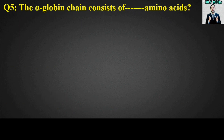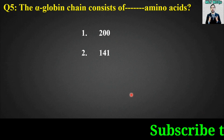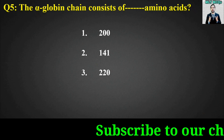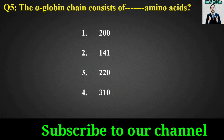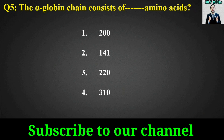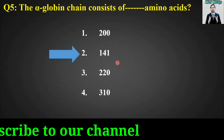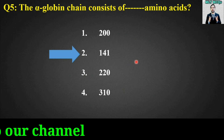MCQ number five: The alpha globin chain consists of blank amino acids. Options are: two hundred, one forty one, two twenty, or three ten. The right answer is option number two — the alpha globin chain consists of one hundred and forty one amino acids.